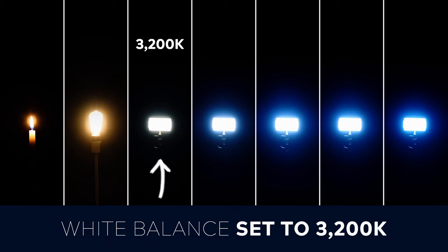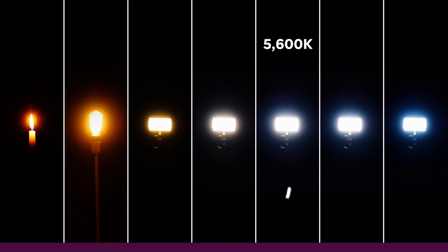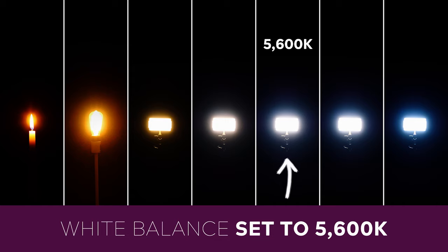Now let's have a look at our two primary color temperatures. Starting with 3,200 degrees Kelvin — at this setting, any tungsten sources will appear neutral and normal, and any daylight sources will appear cool and blue. Conversely, if we change our white balance to 5,600 degrees Kelvin, any daylight sources appear normal and our tungsten sources turn warm and orange. As these are our two most common color temperatures, it's important to understand this relationship.